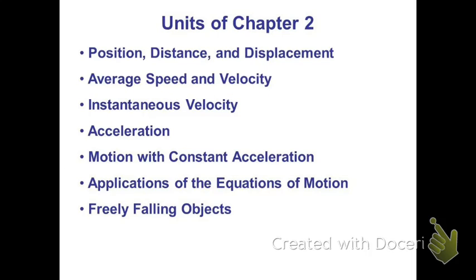We will define instantaneous velocity, acceleration, and a particular type of motion which takes place on the surface of the Earth — constant acceleration motion. And we will close the chapter by analyzing freely falling objects.